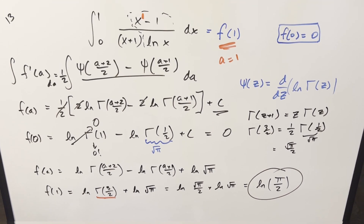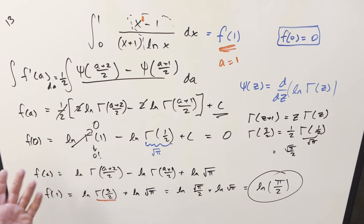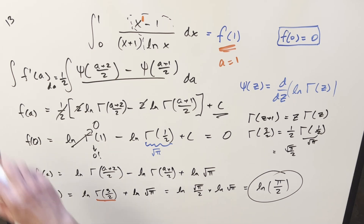So the final answer is ln(pi/2). This is probably not the quick way — I hope the UK integration bee doesn't have a two-minute time limit, because there's no way I'm doing this in two minutes. Anyway, that's it for today. Thanks everyone for watching, have a good day.